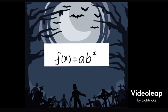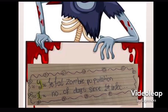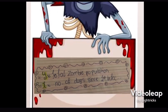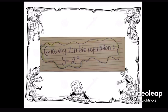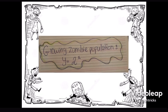We can use y to represent the total zombie population and x to represent the number of days since the first human was infected. The growing zombie population can be calculated using the exponential function y = 2^x.